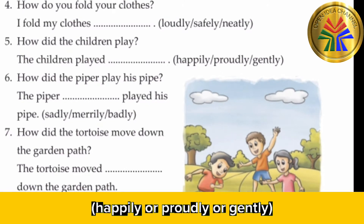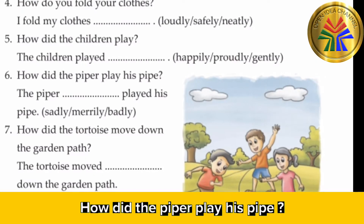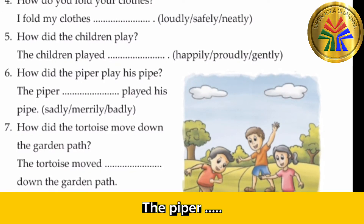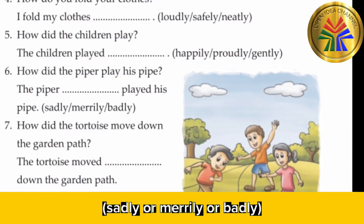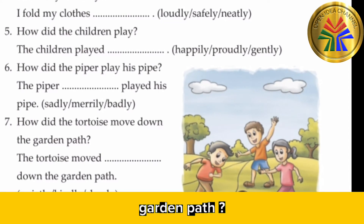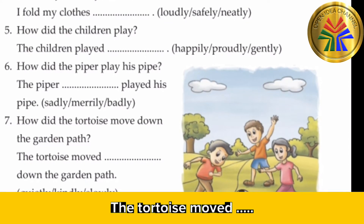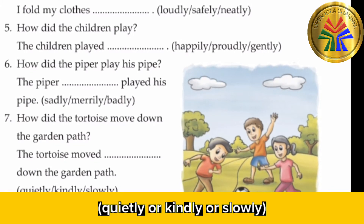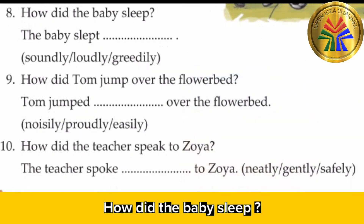Five: How did the children play? The children played — happily, proudly, or gently? Answer: happily. Six: How did the piper play his pipe? The piper played his pipe — sadly, merrily, or badly? Answer: merrily. Seven: How did the tortoise move down the garden path? The tortoise moved down the garden path — quietly, kindly, or slowly? Answer: slowly.